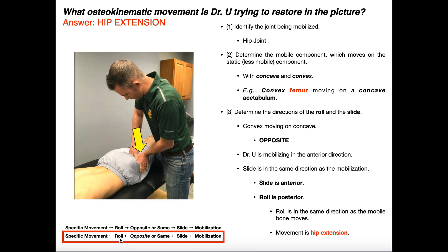Since the roll is posterior, and the roll is always in the same direction as the mobile bone moves, imagine standing up and moving your femur — your thigh — in the posterior direction. The movement you'd be performing is hip extension. So in this case, this would be mobilizing left hip extension, and we can say that the movement this therapist is trying to restore in the picture is hip extension. We just did the same rules as before, but in the reverse direction.